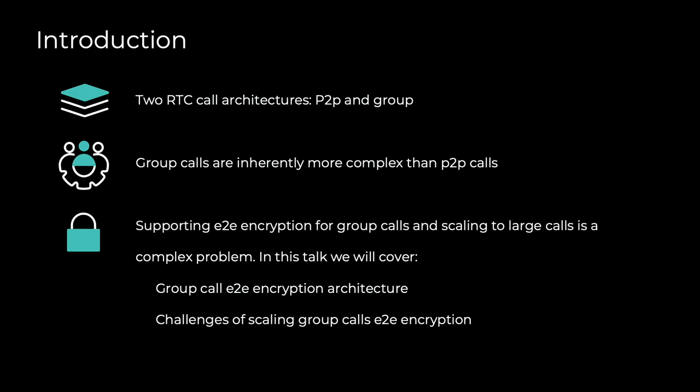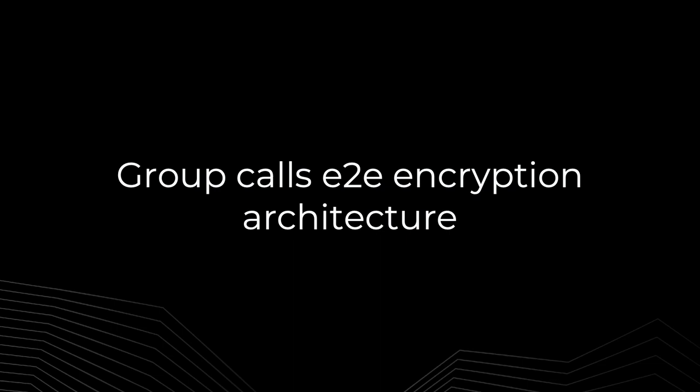RTC audio-video calls can have different architecture and requirements for P2P and group calls. Group calls are inherently more complex than P2P due to the complex scenarios in call initiation and throughout the call. Supporting end-to-end encryption for group calls and scaling to large calls is a challenging problem that we will talk about today. We will cover group end-to-end encryption architecture and challenges of scaling group end-to-end encryption.